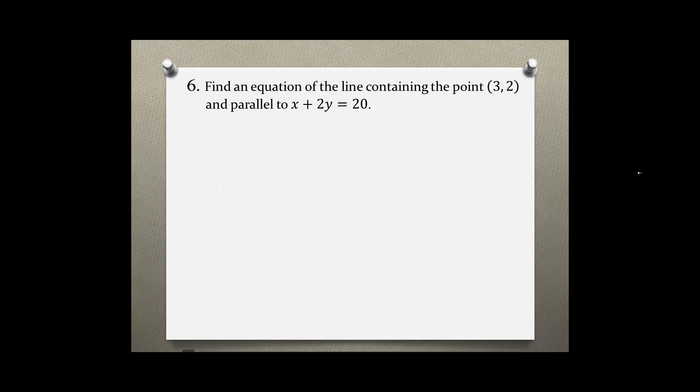Find an equation of the line containing the point (3, 2) and parallel to x + 2y = 20. To solve this problem, we first should find the slope of this equation and then continue with the problem.